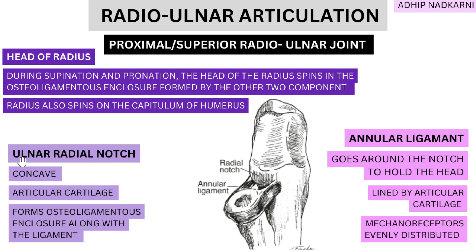At the distal joint, the opposite applies — a radial ulnar notch is present. The ulnar radial notch is concave, and the radial head is convex, so to accept it we need a concave articulating surface. Both surfaces have articular cartilage, and the ulnar notch along with the annular ligament forms this osteoligamentous enclosure.